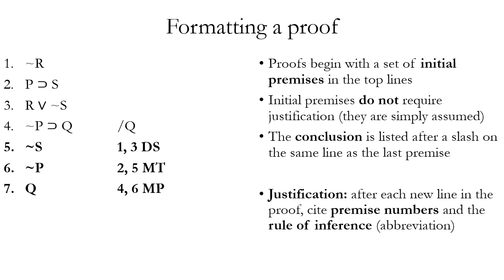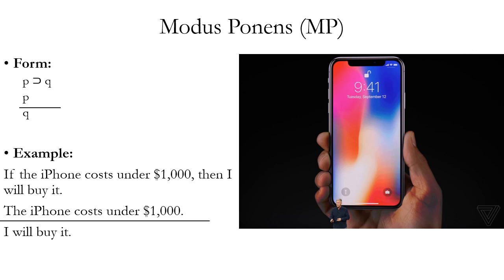Premise one is not R or tilde R, and premise three is R wedge tilde S. We can use disjunctive syllogism to prove that tilde S must also be true based on those two premises. We do however many steps we need before reaching the final conclusion — in this case Q, which required three steps. The proof should always end with the line identical to the conclusion listed after the slash. Once you get to the conclusion, you can stop.